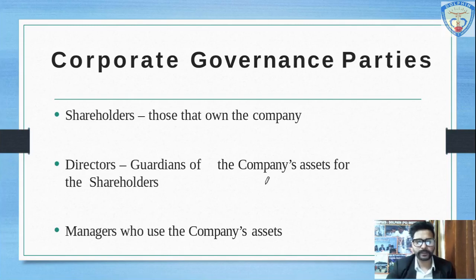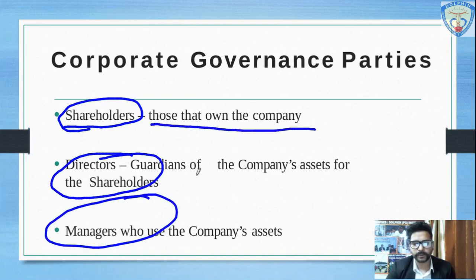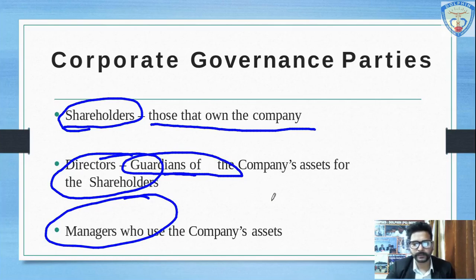Our next topic is corporate governance parties. There are basically three parties in corporate governance. One is the shareholder, another is the director, and the third is the manager. Shareholders are those who own the business. Directors act as guardians of the organization's assets. Managers are those who use the company's assets.